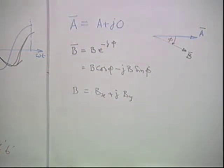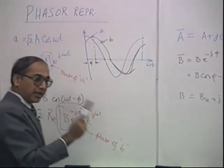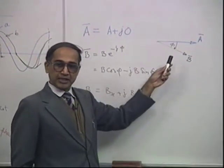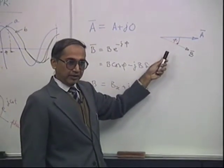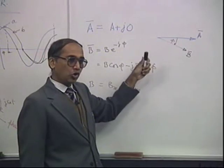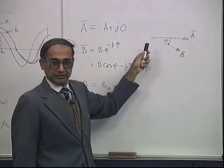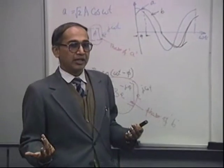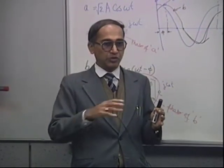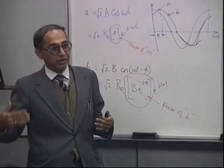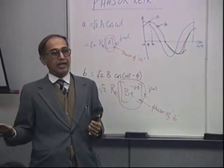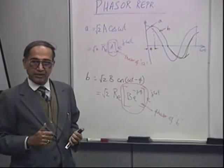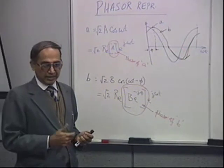This simply means we take this phasor and rotate it at ω radians per second in the anti-clockwise direction. The magnitude at any instant will be root 2 times the real part at that instant for each of the phases. In any large network with several currents and voltages, we can represent all of them as phasors — a cluster of waveforms displaced at arbitrary angles. They can all be represented by voltage phasors and current phasors.